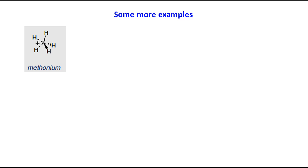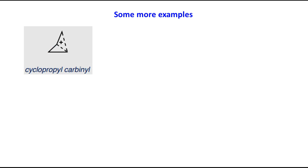One more example is the methanium ion (CH5+), which is essentially protonated methane. The details of this carbocation have already been discussed in part 1 — you can click the link appearing on the screen — so we won't go into the details here.